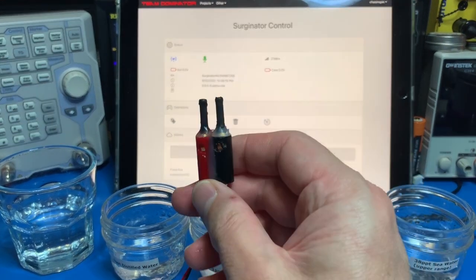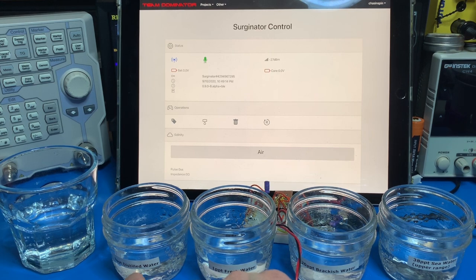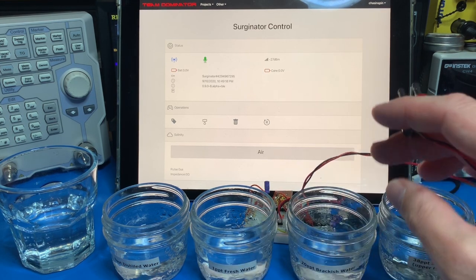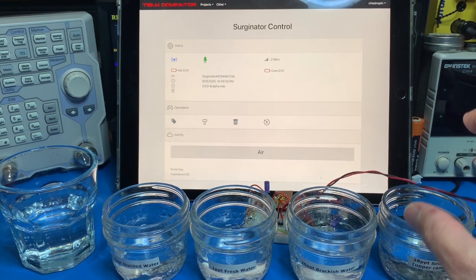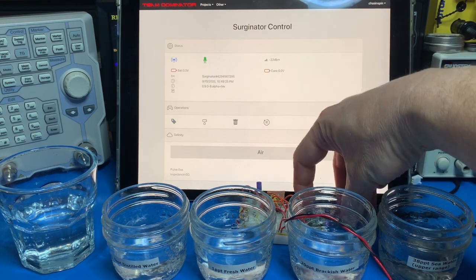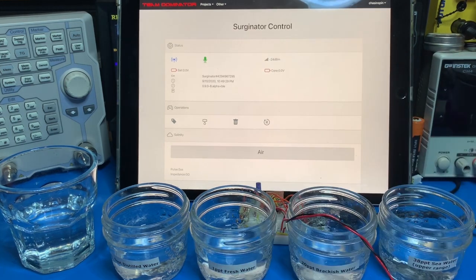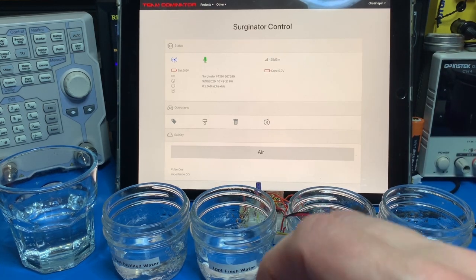So here's a quick demo. We've got our electrodes, we've got four different saline solutions—we've got no saline which is distilled water, fresh water, brackish, and seawater—and then we've got our sensor at the back which is feeding via Bluetooth to a webpage which we're running on the iPad.